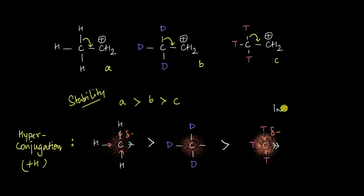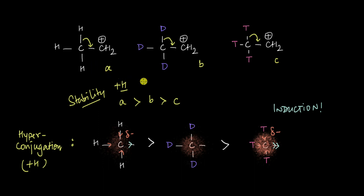So from the point of view of induction, the trend is exactly the opposite: CT3 is a stronger +I group, followed by CD3 and then CH3. So if you look at the stability of these three cations purely on the basis of induction, because CT3 has the highest electron density it will push the electrons in the sigma bond more towards the cation compared to CD3 and CH3. Therefore, purely on the basis of induction, C should be more stable than B, which should be more stable than A.